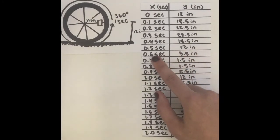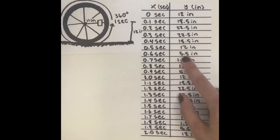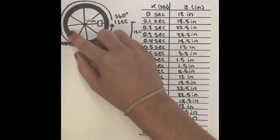At 0.6 seconds, the reflector is at 5.5 inches, meaning it has started to go down so it is in this general area of the wheel.